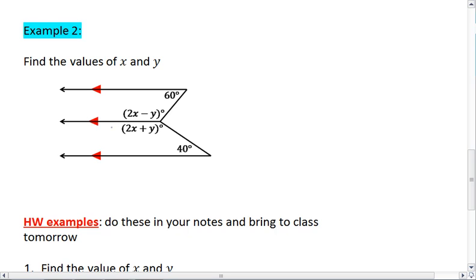We'll take the top one and the middle one. If we were to extend these lines, we notice that the two parallel lines are in fact cut by a transversal. We notice that the measure of angle here was 60 degrees and this one here, which is 2x minus y degrees, are consecutive interior angles, meaning that they are supplementary.